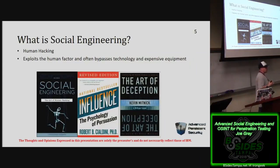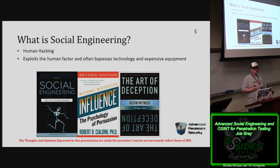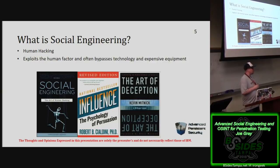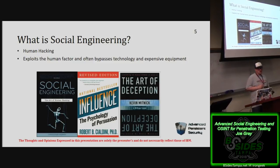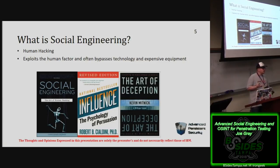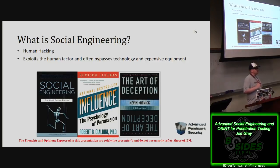Social engineering is the art of human hacking. It's taking human psychology and misusing it to get people to do or say things they should not. If you want to read up on it, these three books are what I'd recommend: Christopher Hadnagy's Social Engineering: The Art of Human Hacking, Kevin Mitnick's Art of Deception, and Dr. Robert Cialdini's Influence, from which we get the Six Principles of Persuasion.